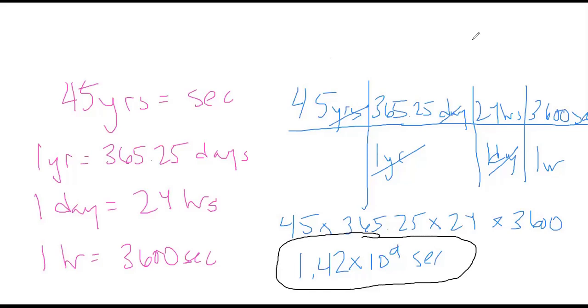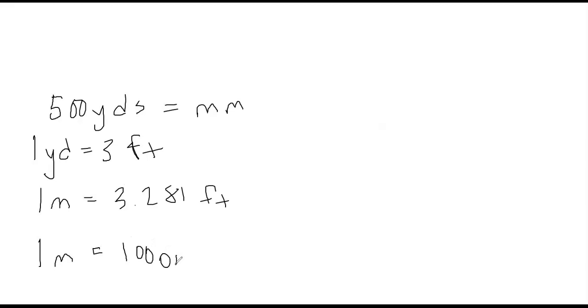Now I'm going to give you guys one to try on your own. Let's go with 500 yards, how many millimeters? So one yard is three feet, one meter is 3.281 feet, and one meter is 1000 millimeters. Try this one at your seats.